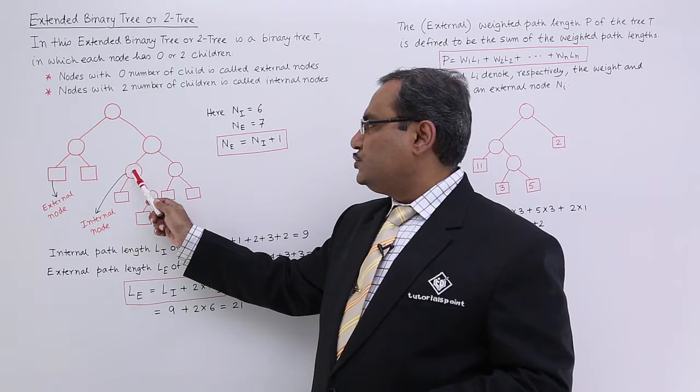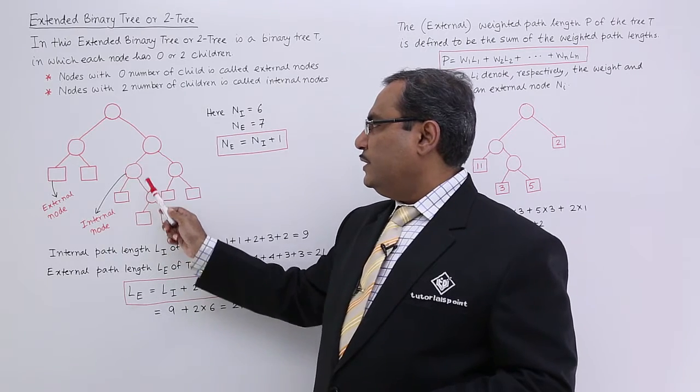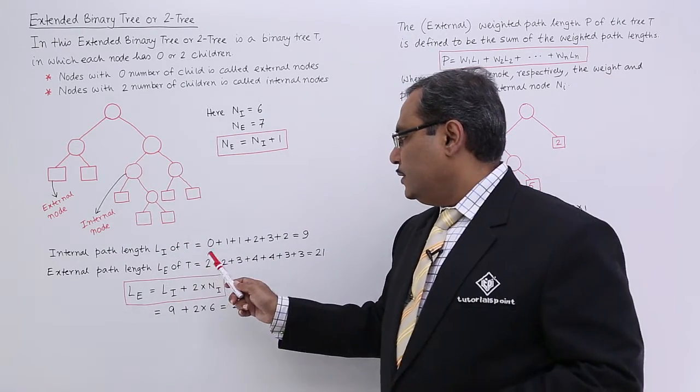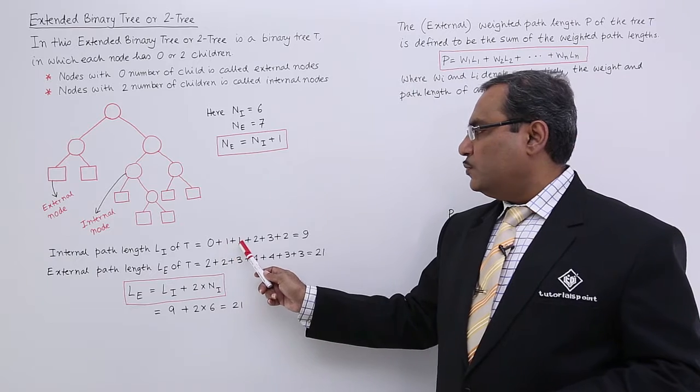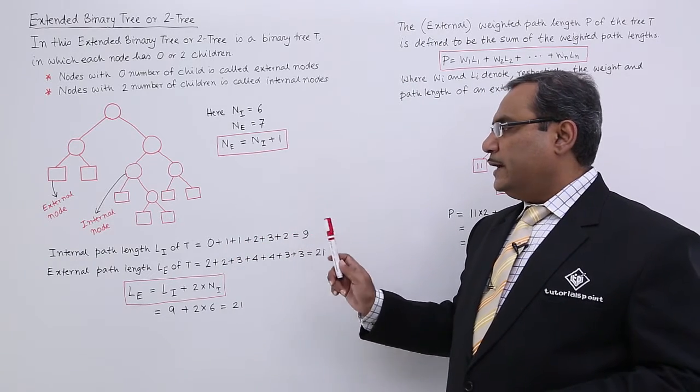for this one is 1, for this one is 2, for this one is 3, and this one is 2 again. So 0 plus 1 plus 1 plus 2 plus 3 plus 2, you are getting 9.